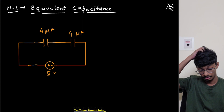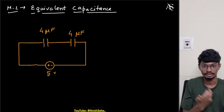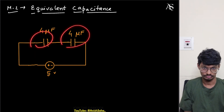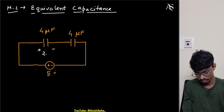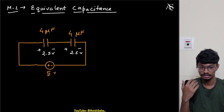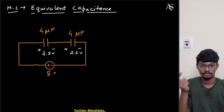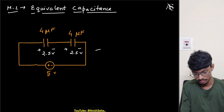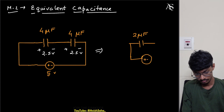Now we have 4 microfarads in series with C3 which is also 4 microfarads. From here we can observe that the voltage will simply divide equally due to equal capacitances, giving 2.5 volts across each. Or if you prefer, convert this series combination — the equivalent is 2 microfarads — with plus/minus 5 volts applied.